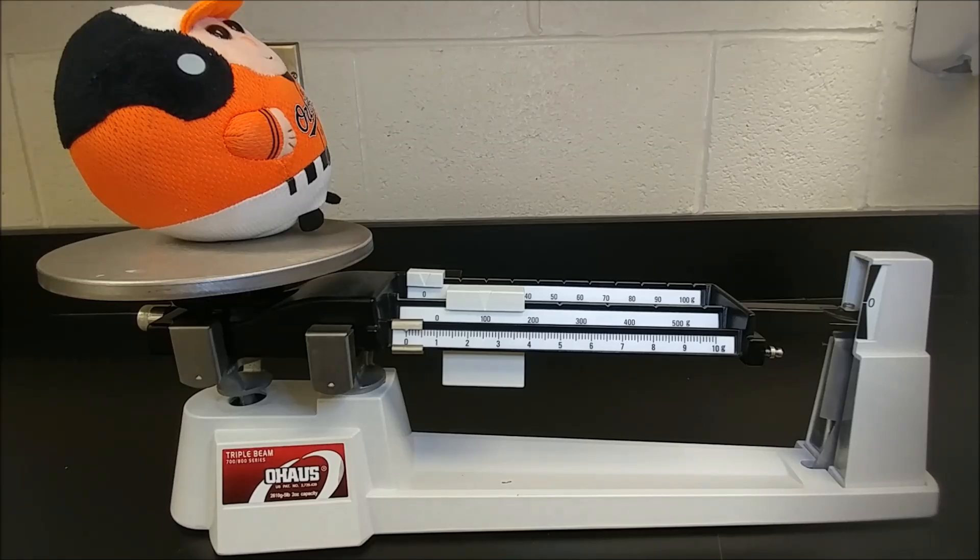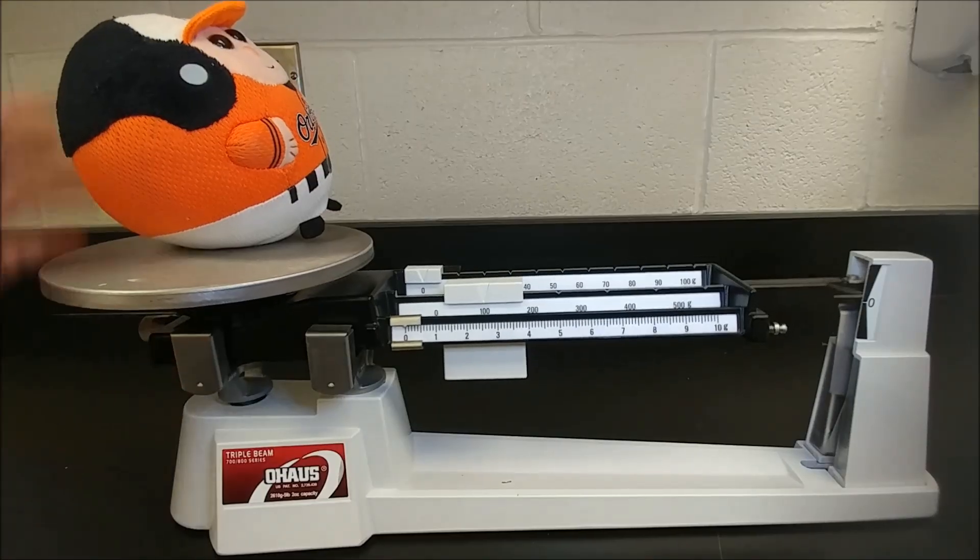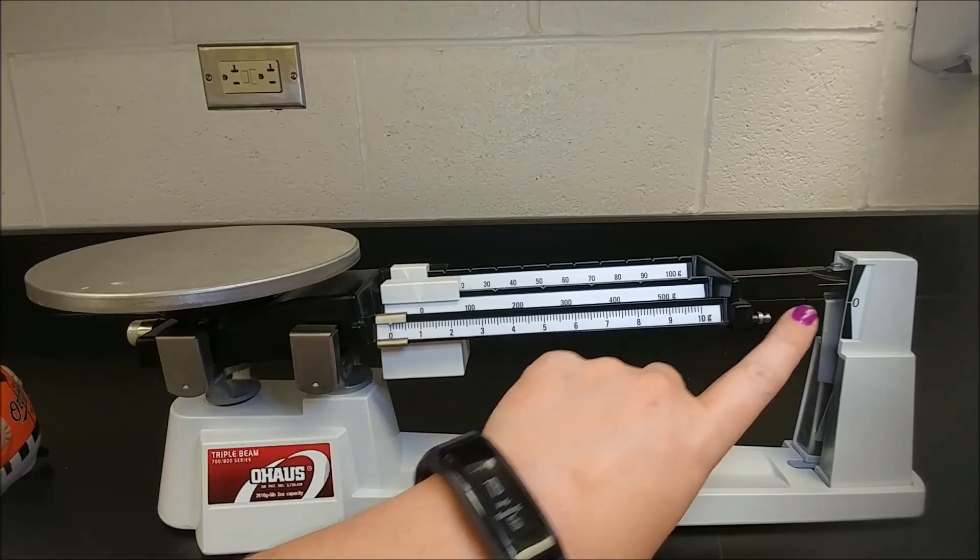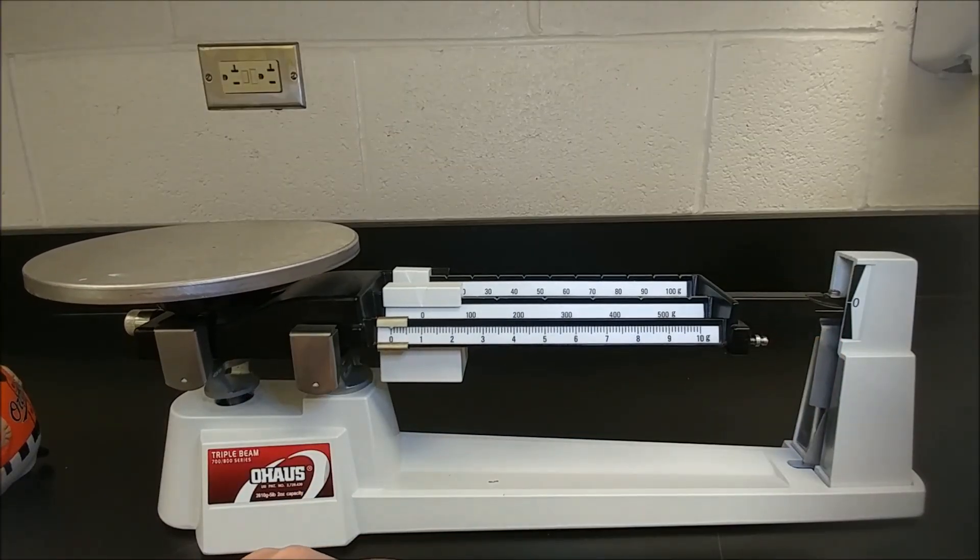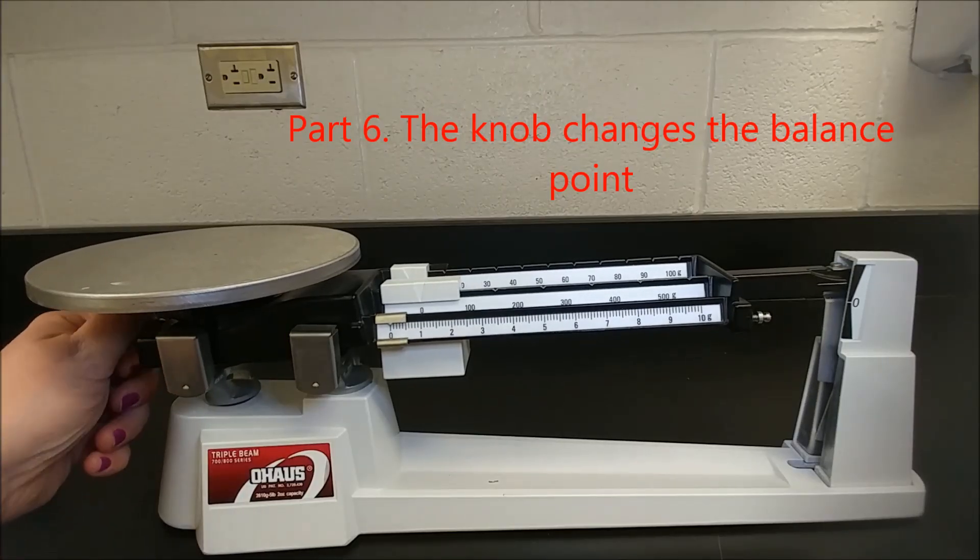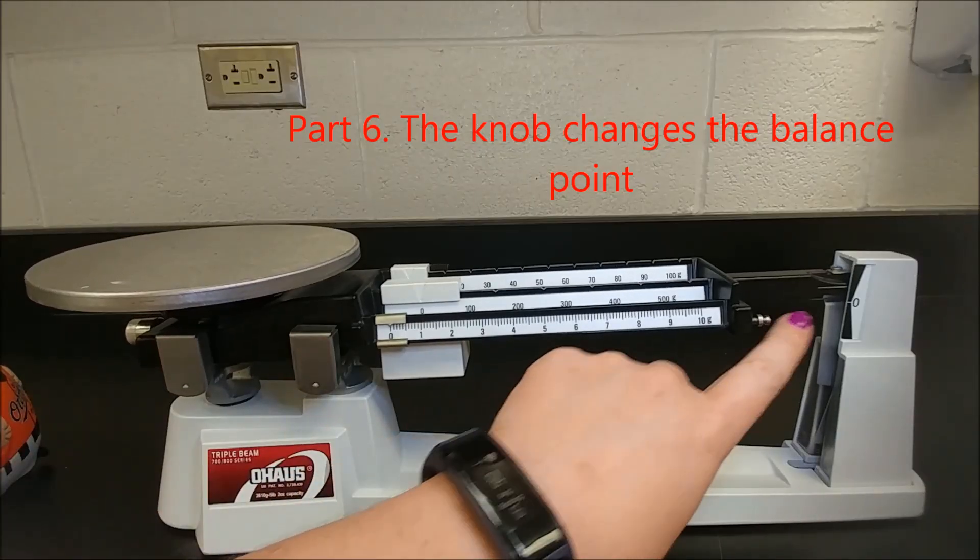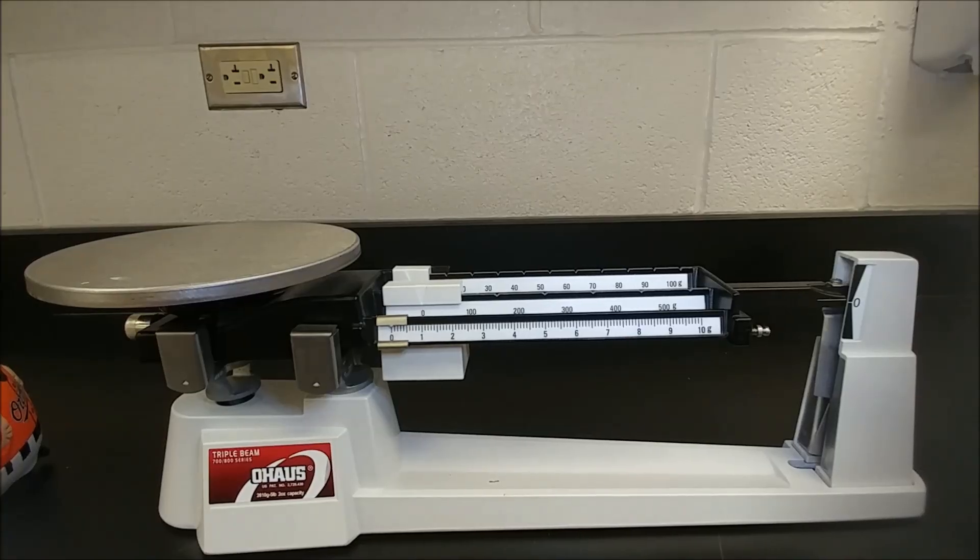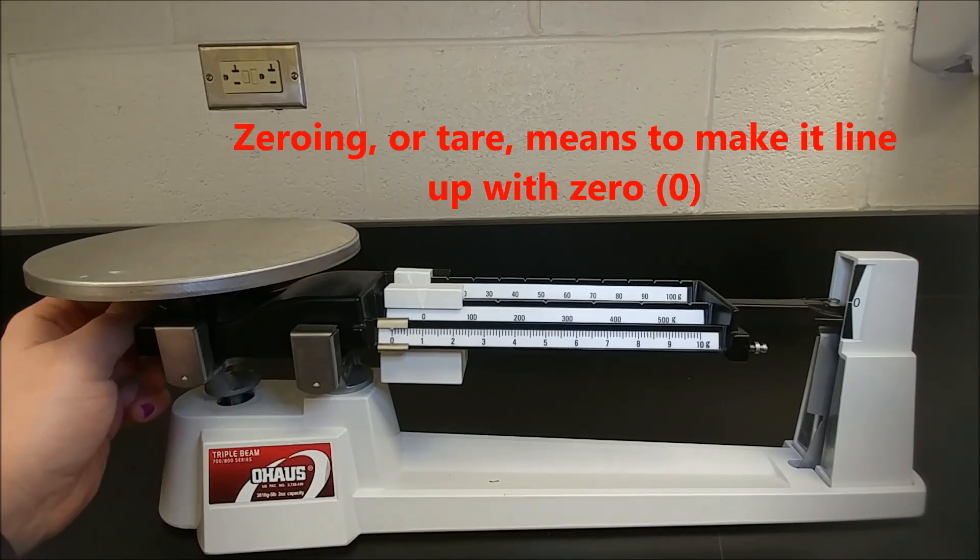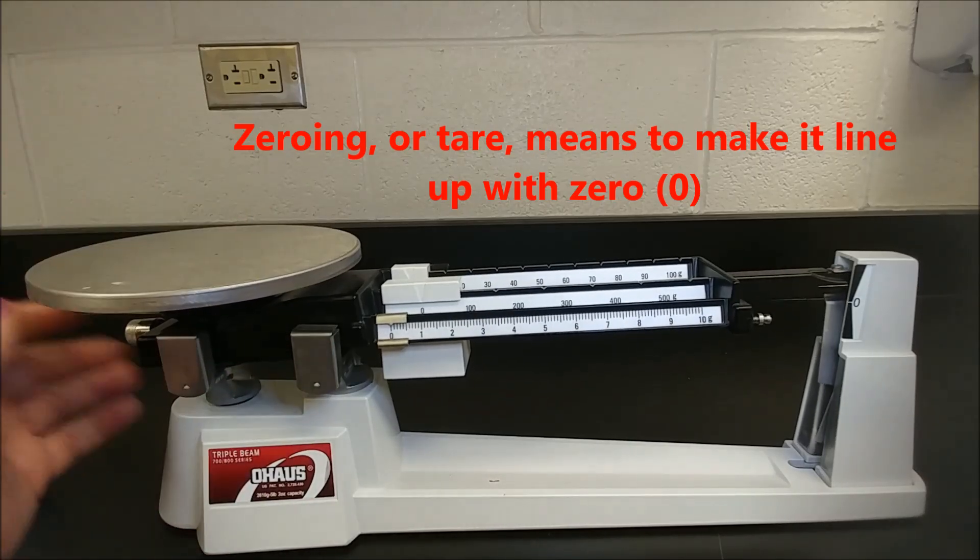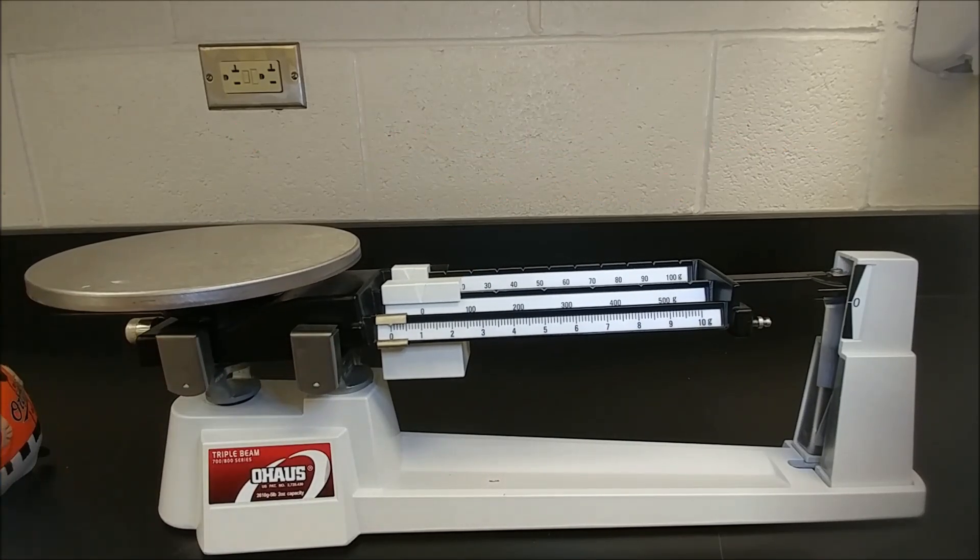But sometimes it gets a little messed up and your line doesn't line up. You'll notice that my line here isn't exactly matching the zero. So this knob over here at the end can turn which allows you to change where this line matches. This is known as zeroing or taring. So the goal is to make it so that when nothing is on the pan it lines up with zero.